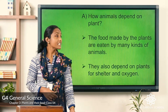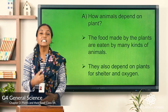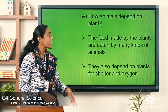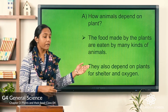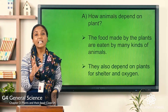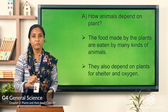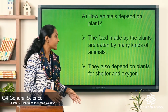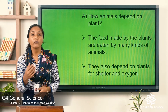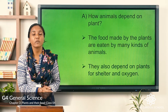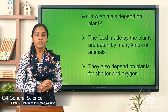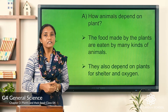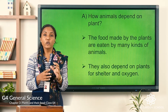Let us see first how animals depend on plants. The food made by plants is eaten by many kinds of animals, so they depend on plants for food. Animals also depend on plants for shelter as well as oxygen.